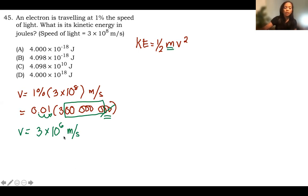How about the mass? For the mass, it's something that you have to memorize. An electron has a mass of approximately around 9.1 times 10 to the negative 31 kilograms.